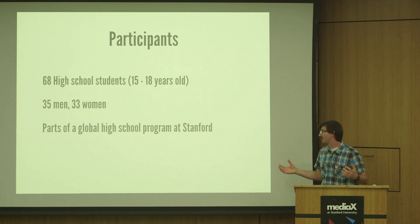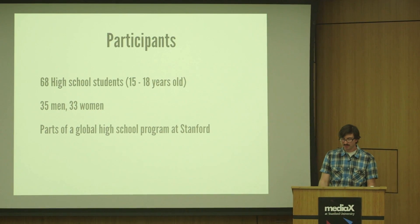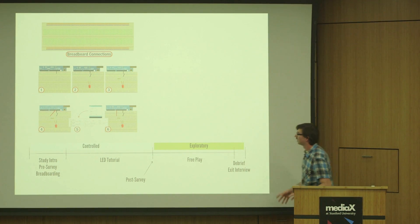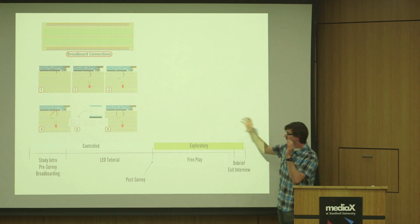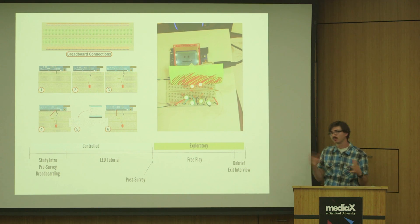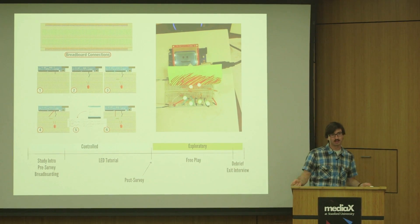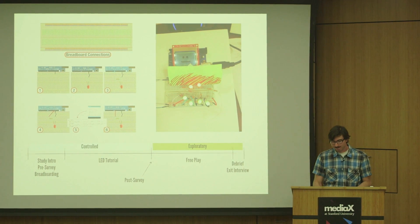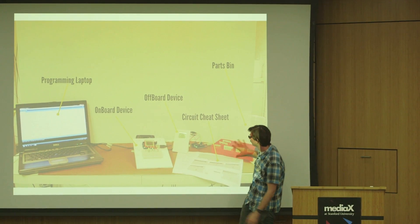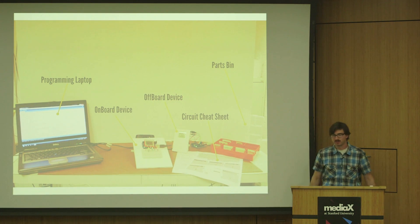So for this, we actually had 68 high school students come in. Fairly even splits. They were all part of the Stanford program in the summer. And what they did was the typical hello world of electronic design, which is making an LED blink. So this was a control component. We had them build a tutorial. They were guided by this device. They were working through it. And then what we did was we actually had an exploratory part afterwards, where they would just build. We had no ideas of what would happen. We just wanted to see if they would retain what they had learned, and could maybe apply it to doing some other things, and see what they might be able to do creatively. This is just to give you a sense of the environment, what they were working with. They had a set of materials, some extra materials, either the onboard or the off-board device, a programming laptop, and that little cheat sheet, those diagrams to guide them through things.